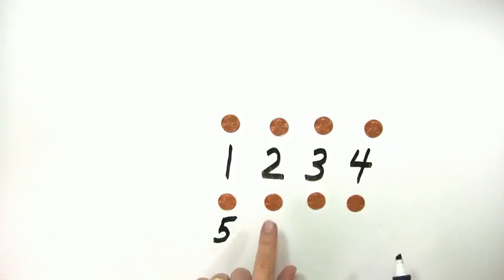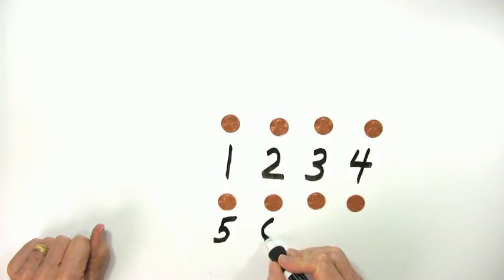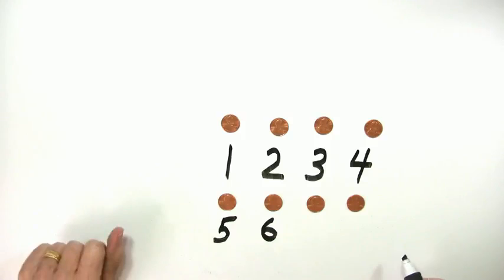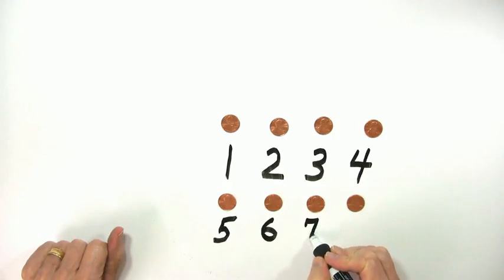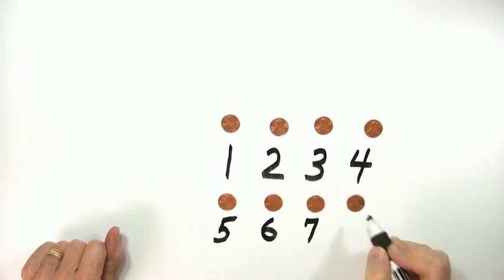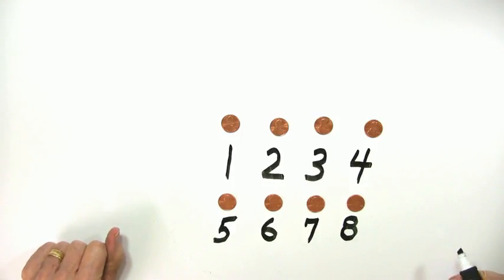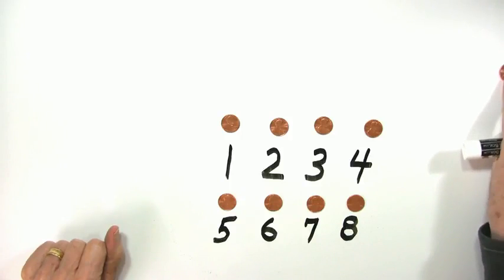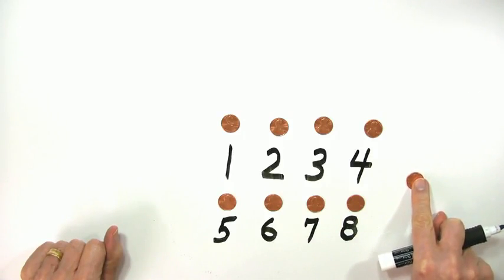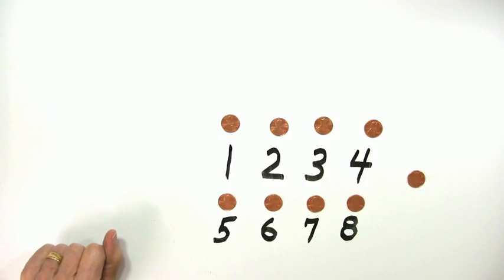What about this one? If that's penny number five, then what penny is this? Penny number six. And then what is this penny? That is penny number seven. One more here, penny number eight. So we have one more penny all by itself, we'll bring it down to here. And which penny is that? Penny number nine.